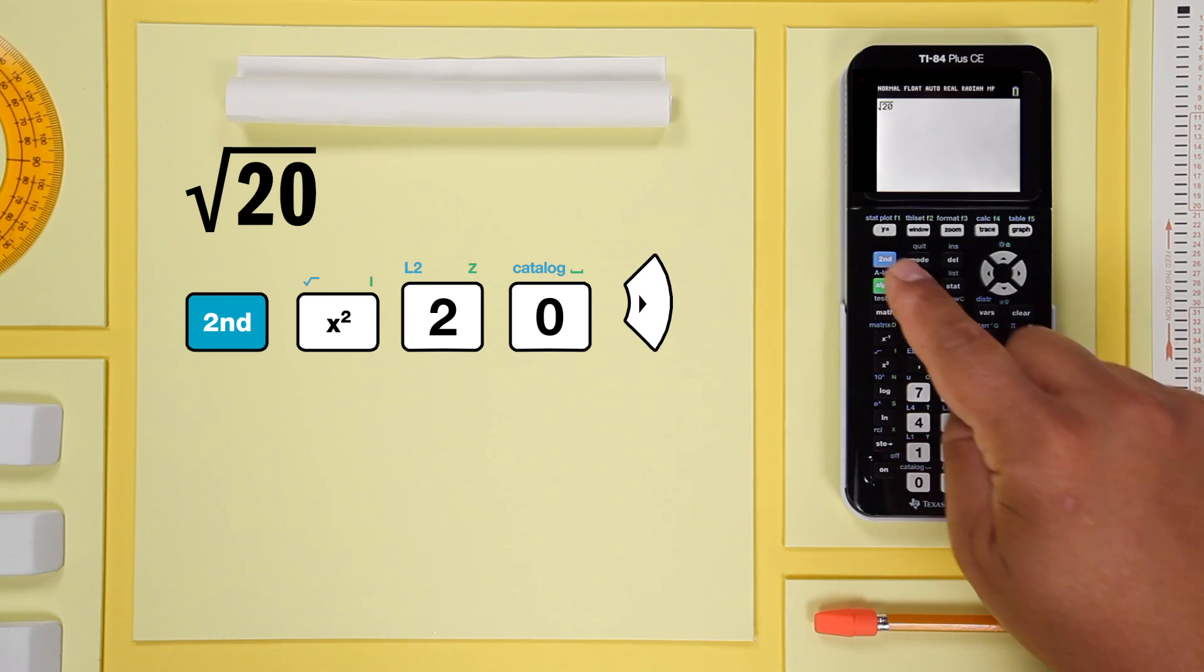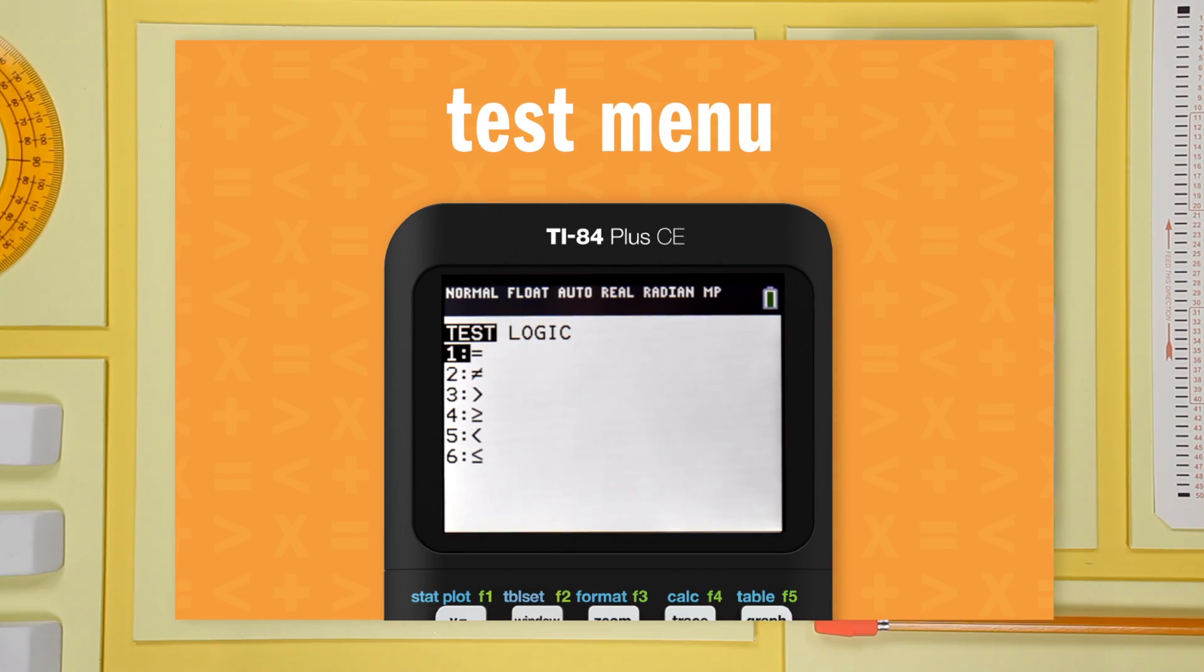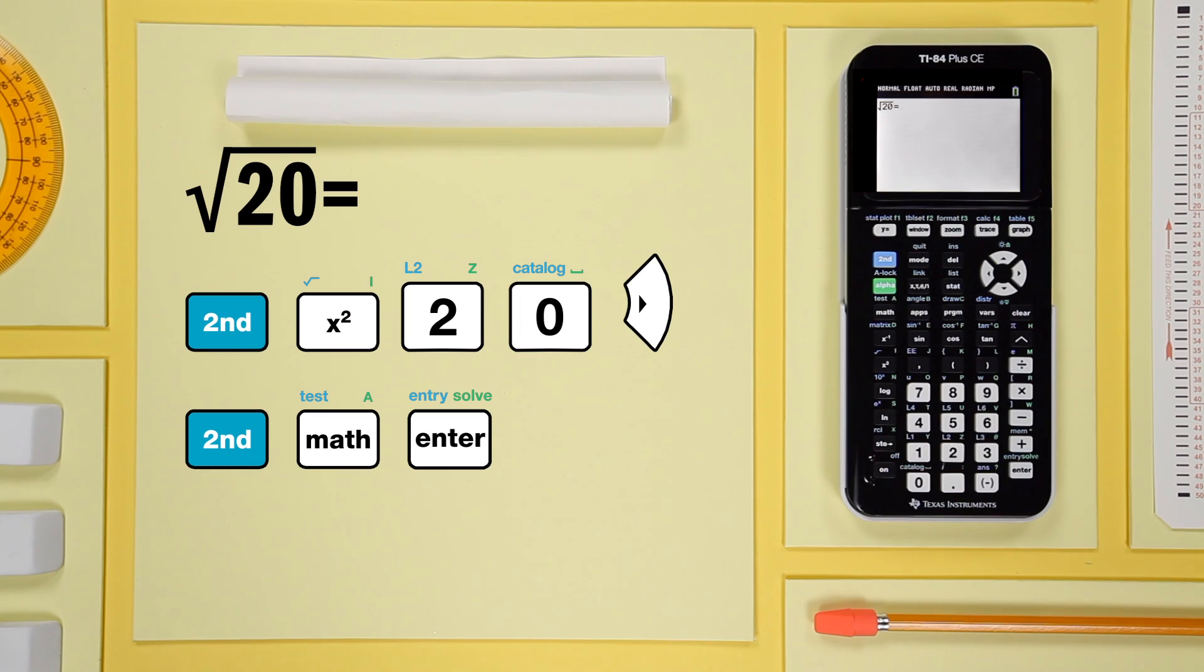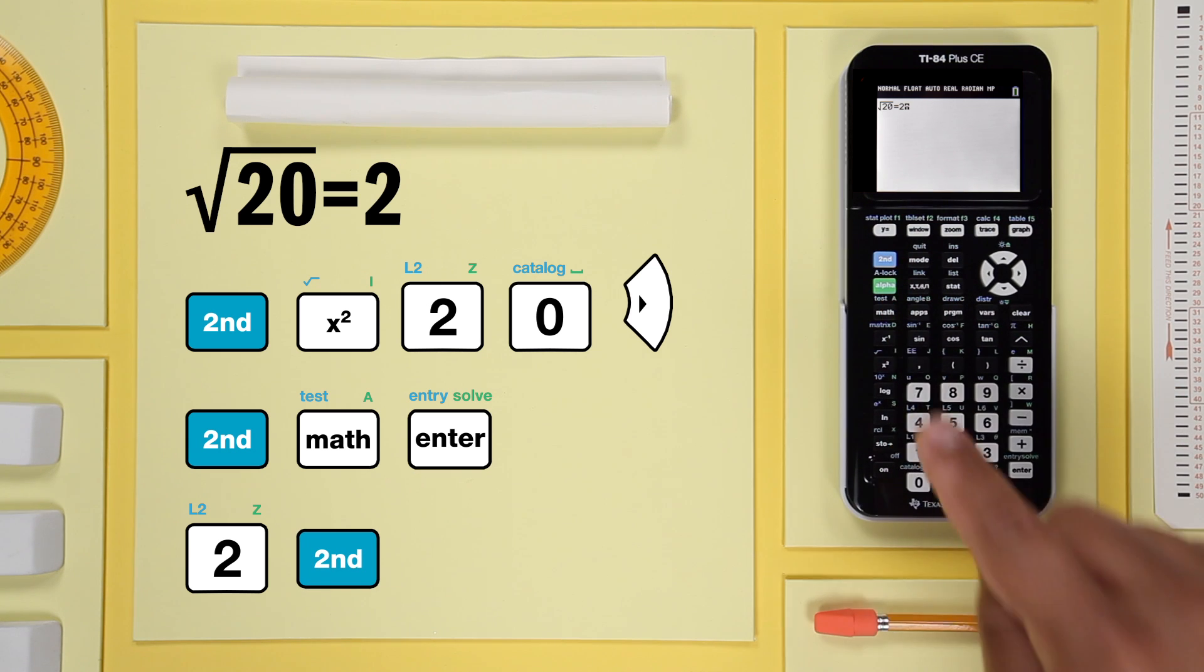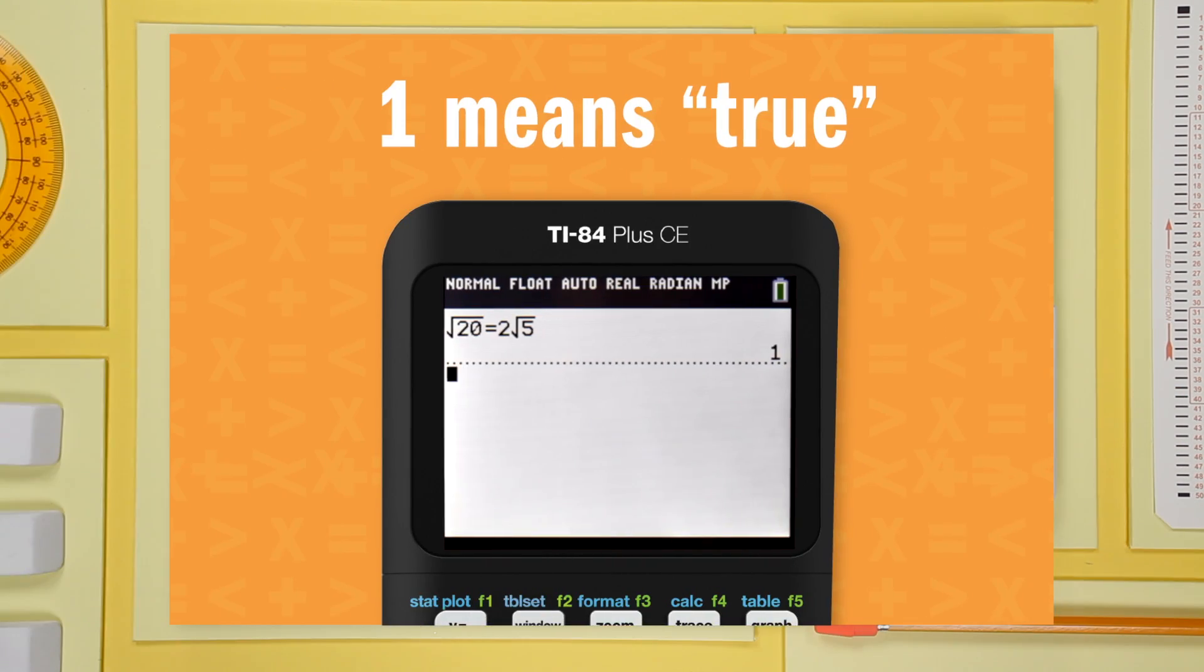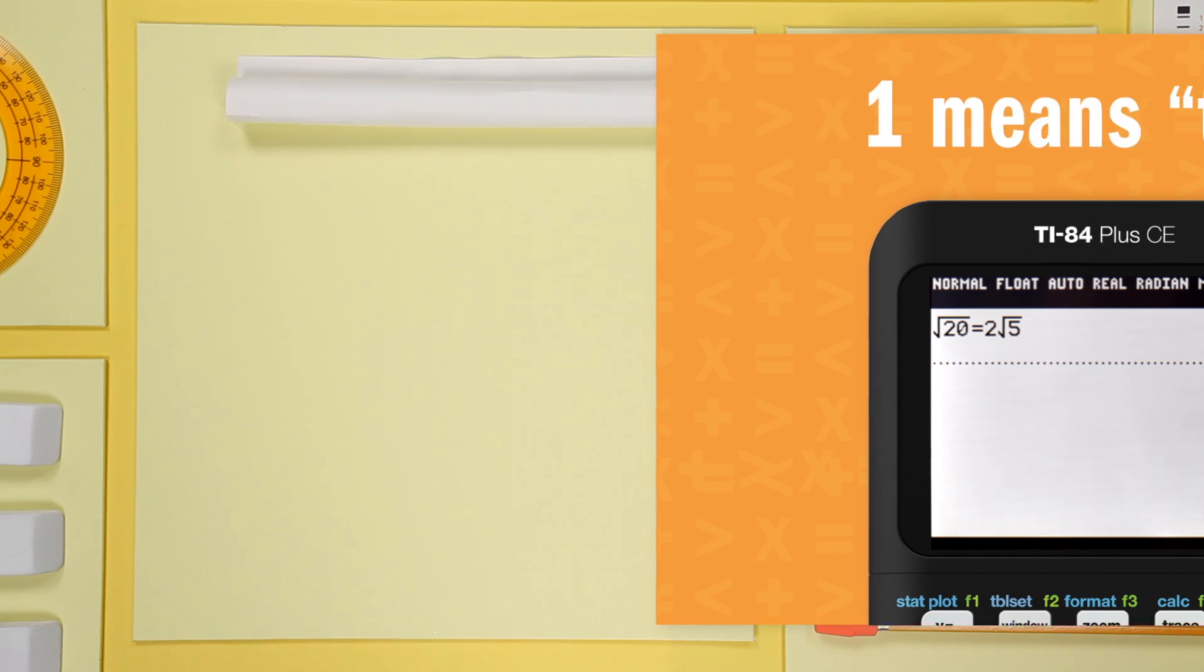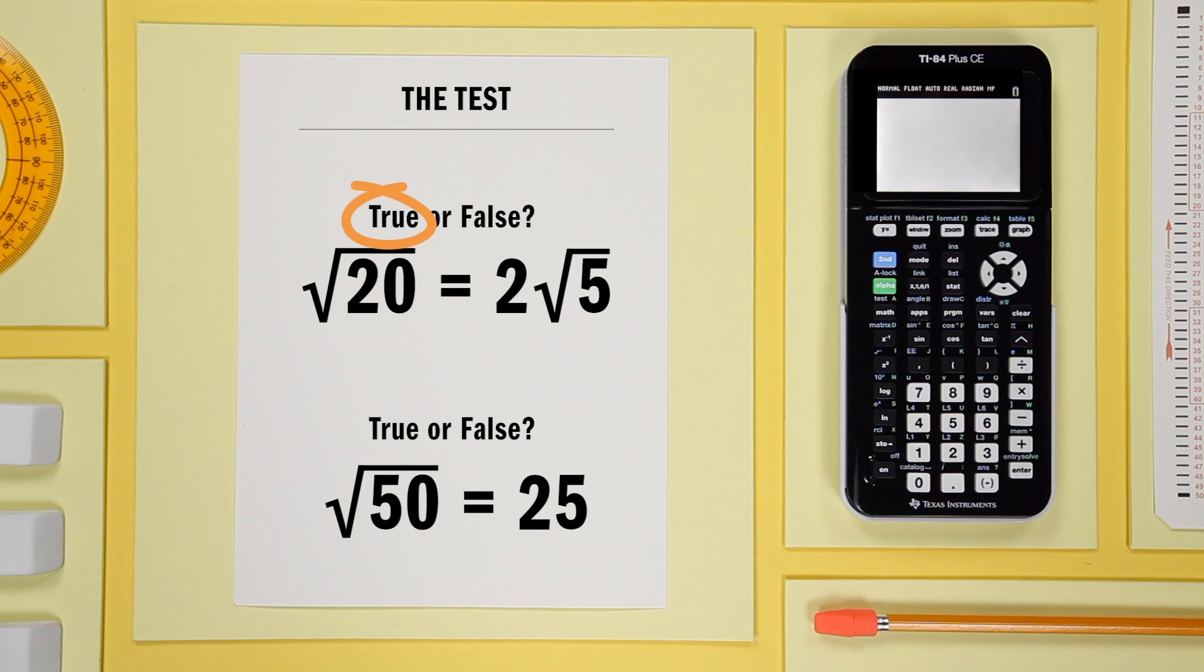Then open the test menu by pressing second test. Select the equal sign and press enter. Plug in the second expression: two second square root five and enter. You see that one—that means the statement is true. The expressions are equivalent.